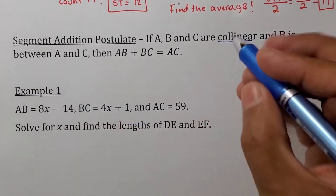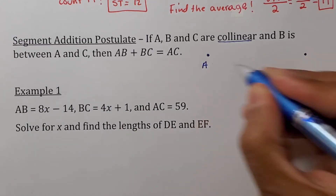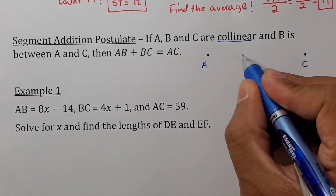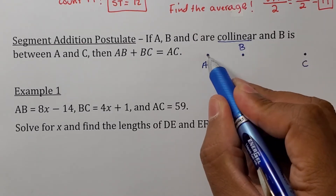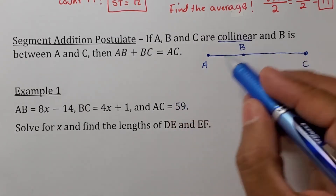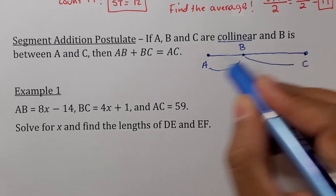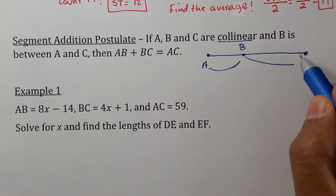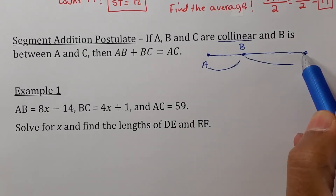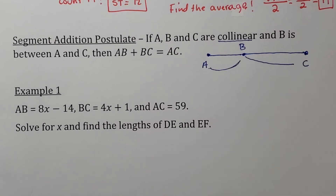Let me make it visual. If A, B, and C are collinear — three points on the same line — and B is between A and C, then I have point A here and point C here, with point B somewhere in between. When you connect the points, they lie on the same line. All this is saying is that if I add segment AB plus segment BC, they should add up to the whole segment AC. It's like the big segment being cut into two pieces — when you put them back together, you get the big segment.